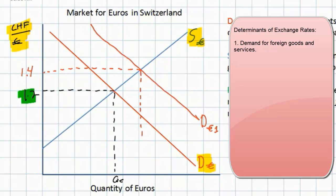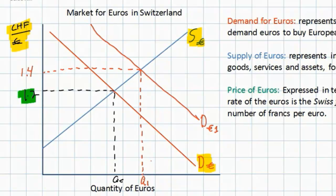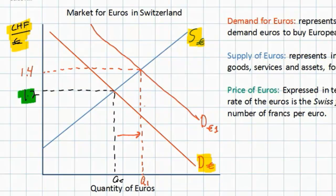As the exchange rate rises, the quantity supplied of euros increases. At higher exchange rates, European households would be willing to supply a greater quantity of their currency to Swiss households. This is because when the euro is worth more francs — 1.4 francs instead of 1.2 francs — European households would find Swiss goods, services, and assets more attractive. Therefore there would be an inflow of euros into Switzerland, allowing Swiss households to acquire the greater quantity of euros they demand due to their higher incomes.